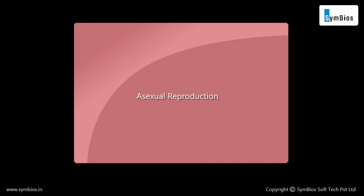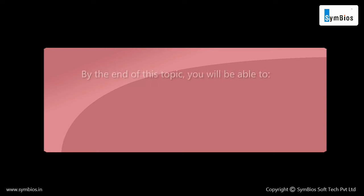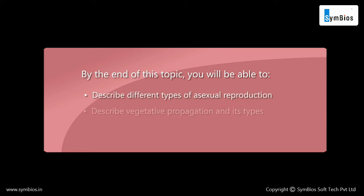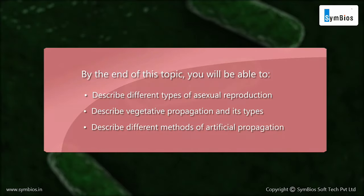Asexual reproduction. By the end of this topic you will be able to describe different types of asexual reproduction, describe vegetative propagation and its types, and describe different methods of artificial propagation.